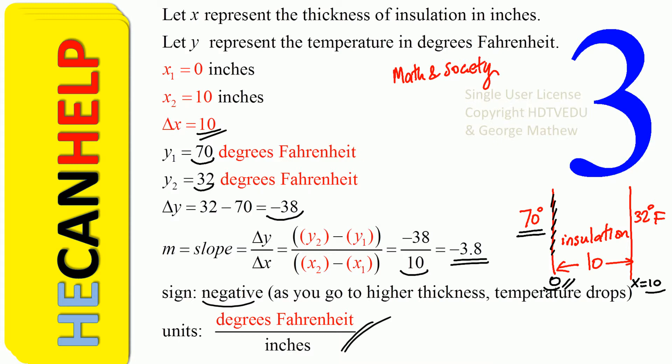We know what it means. We have a sign. The sign tells you whether you're going to increase or decrease as you go from left to right. What is the unit? Fahrenheit over inches. This is sometimes called the temperature gradient.